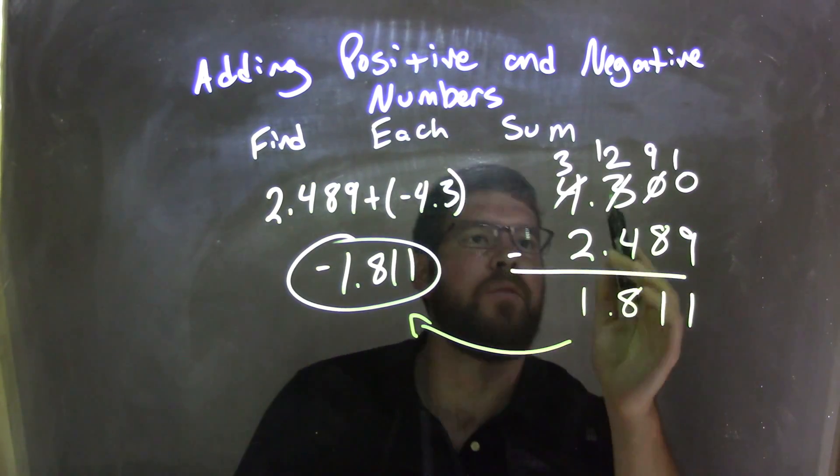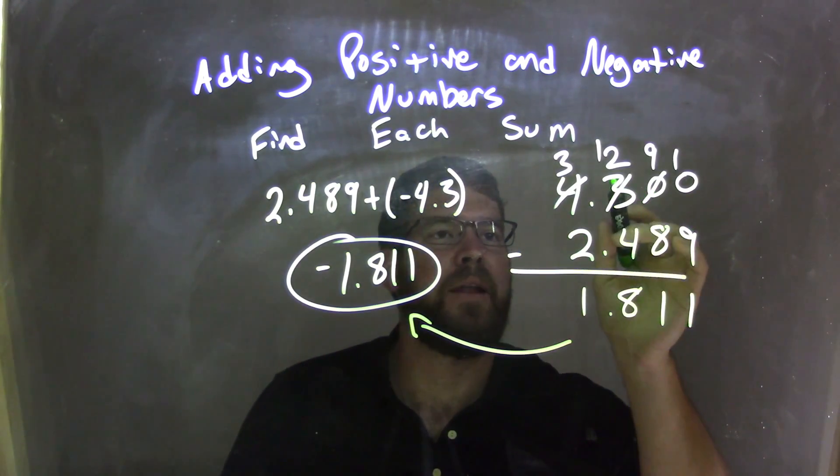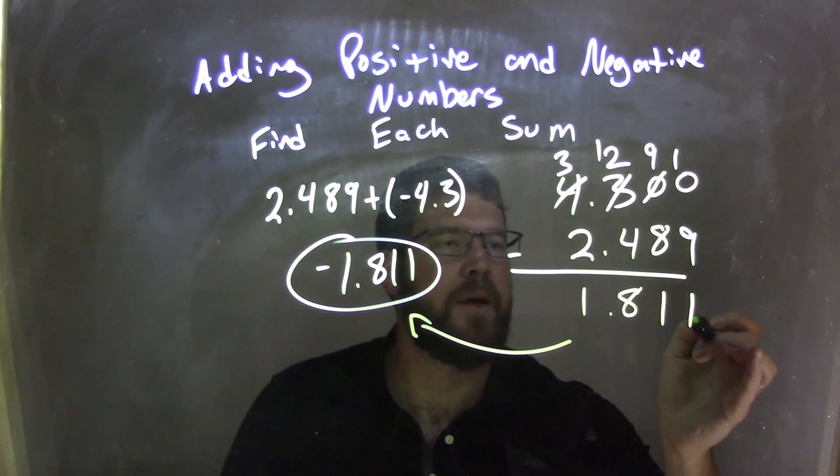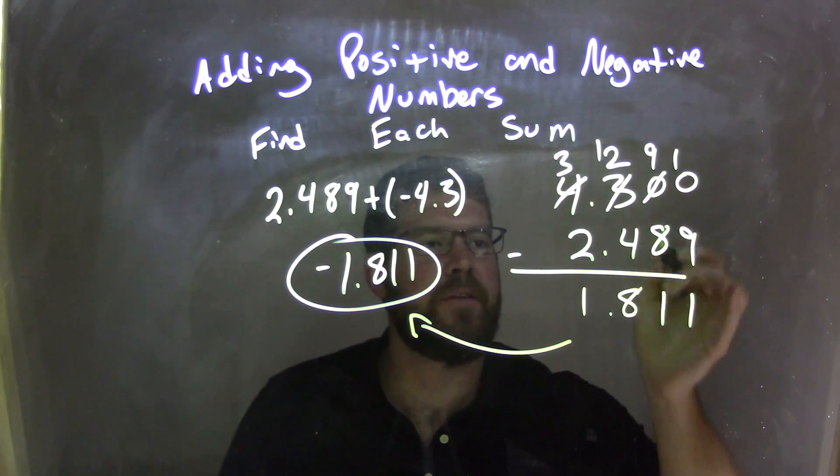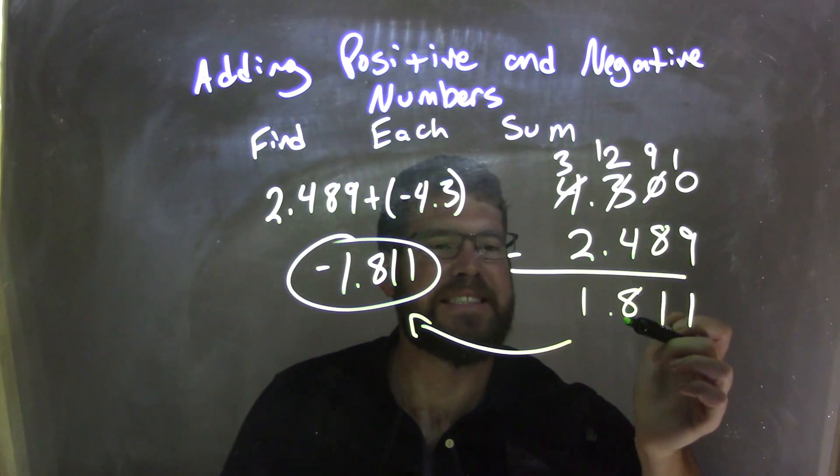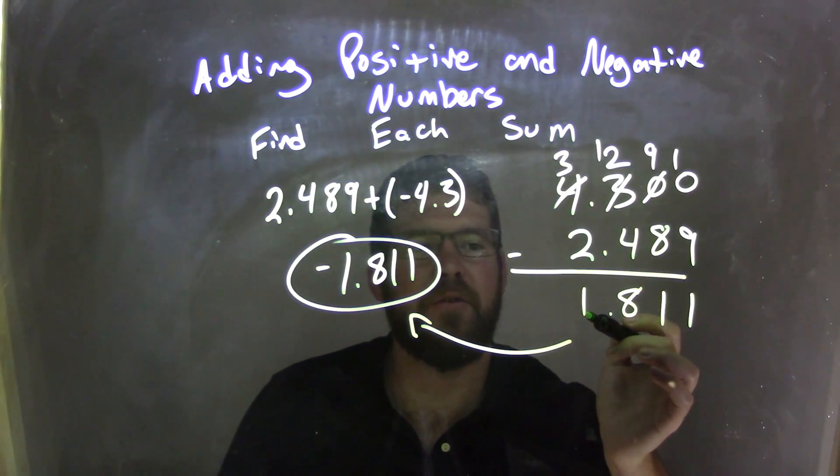So I brought over the place values, made it 2.910. So 10 minus 9 became 1, and then 9 minus 8 was 1. I had to cross out the 4, make that 3, bring over that 1 value. So I have 12 minus 4, which is 8. 3 minus 2 is 1.